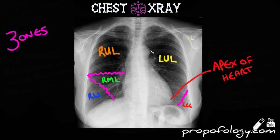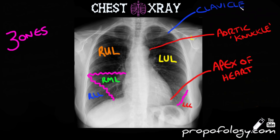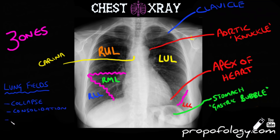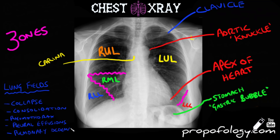You can see the apex of the heart, the aortic knuckle which is the arch of the aorta as it comes off the heart, the clavicles at the top, and the carina — the bifurcation of the trachea into the right and left main bronchus. Something that sometimes catches people out is the gastric bubble, which is air in the stomach sitting under the left diaphragm. When looking at the lung fields you should consider whether there is consolidation, collapse, or pneumothorax — that is, air in the pleural cavity where lung markings don't reach the edge. Also consider tension pneumothorax with tracheal deviation, pleural effusion which is a fluid collection compressing the lungs, or pulmonary edema within the interstitium of the lung itself.